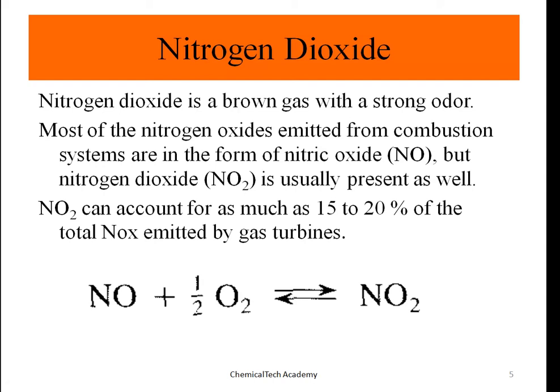Nitrogen dioxide, NO₂, is a brownish gas with a strong odor. Most of the nitrogen oxides emitted from combustion systems are in the form of nitric oxide, but NO₂ is usually present as well, because much of the NO is unstable and converts to NO₂. NO₂ can account for as much as 15 to 20% of the total NOx emitted by gas turbines.